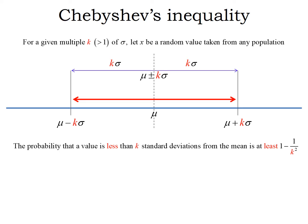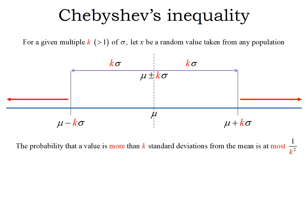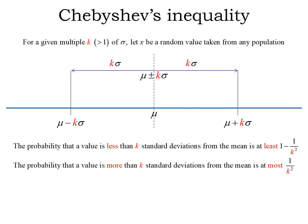Some situations the probabilities increase dramatically. Remember the total probability of being somewhere has to be 1. So if 1 minus 1 over K squared is the probability of being in the middle, if we subtract that from 1, we get the probability of being on the outside. That means the probability of being more than K standard deviations away from the mean is going to be at most 1 over K squared.